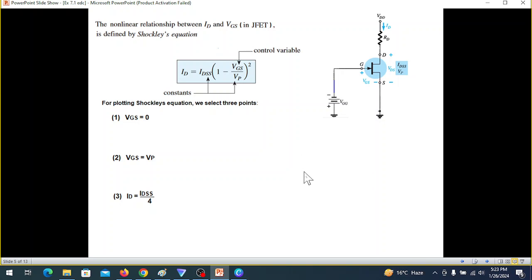These three points are sufficient for plotting, but we can have more if we need more accuracy. This is the graph that we're going to fill: VGS on this side and ID on this side. First, VGS equals zero. When this voltage is zero, what is the current? By solving, ID equals IDSS. So IDSS is a current whose value is somewhere here, so we'll mark that point.